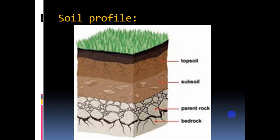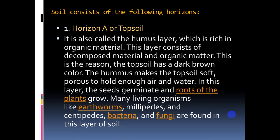This is the soil profile. As you can see, the uppermost layer is the topsoil, followed by subsoil, parent rocks, and bedrock. These are divided into A, B, and C horizons. Horizon A is also called topsoil or the humus layer, because plants grow here and organic material is abundant. Due to this, the plant and animal kingdoms live here.